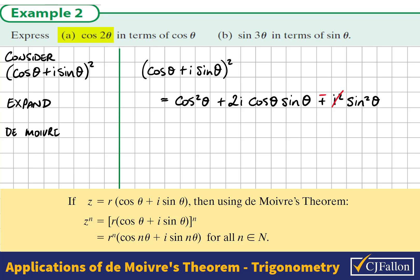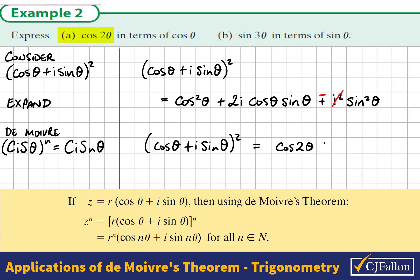We could also apply De Moivre's Theorem to this expansion. De Moivre's Theorem says that when you raise a number to the power of n, its argument is multiplied by n. In other words, (cosθ + i sinθ) to the power of 2 is cos2θ + i sin2θ.